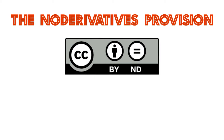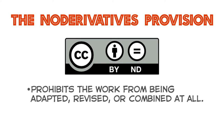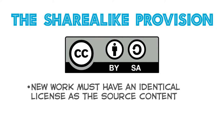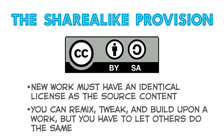Sometimes the BY license has the No Derivatives, or ND, provision. The ND provision prohibits the works from being adapted, revised, or combined at all. With a Share Alike, or SA, provision, your new work must have an identical license as the source content. In other words, this license lets others remix, tweak, and build upon a work, as long as they credit the creator and license their derivatives under identical terms.